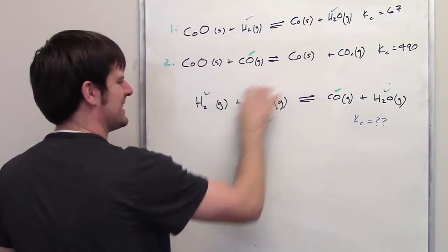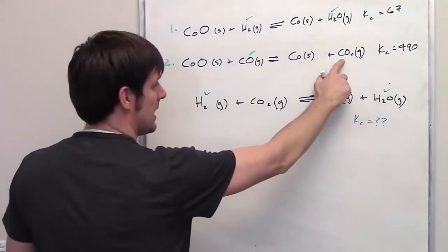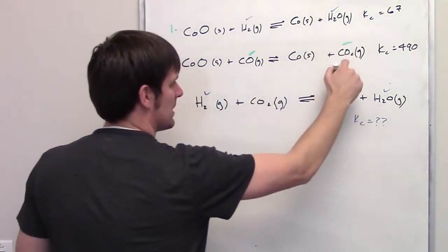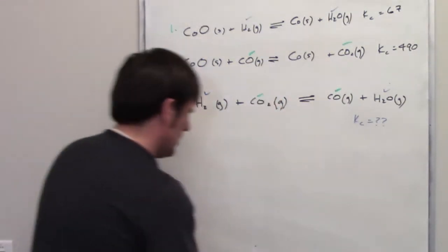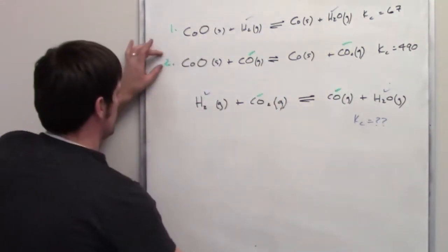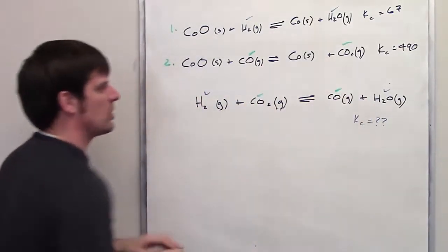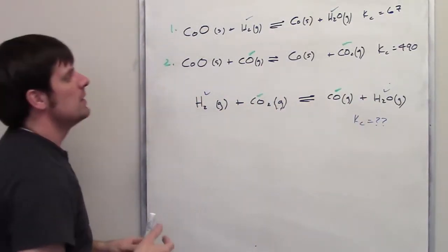Now I've got this cobalt solid. It doesn't appear anywhere down here. This carbon dioxide, it's on the right side of the equation up here. It's on the left side of the equation down there. Is there anything that I can do then with equation 2 to make it come closer to resembling this overall target equation we're trying to get to?